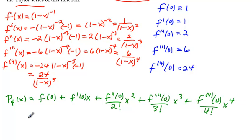Okay, now we're going to plug in the values we just calculated up above for these functions, and we get 1 plus 1x, or x, plus 2 over 2 factorial, which I'll put 2 in for that now,